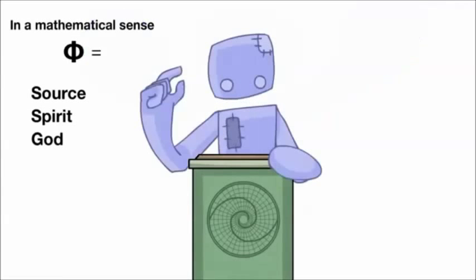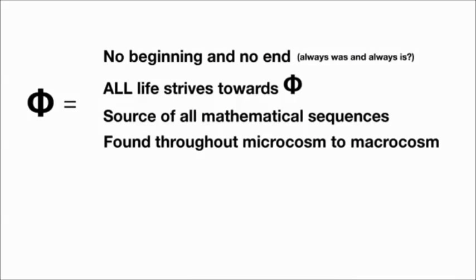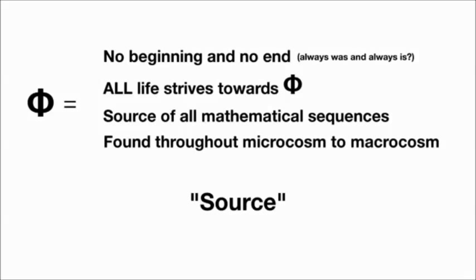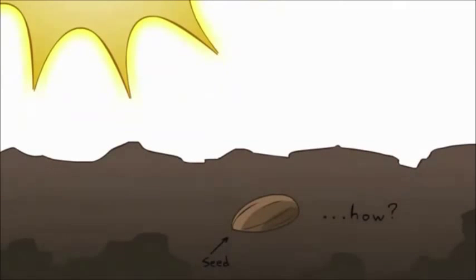So Phi is basically source, or spirit, or God in a mathematical way of thinking. The math of God. Don't forget that this sequence is an intimate part of nature itself. I'm going to call it source. It is the source of all mathematical sequences, and all life in existence grows based on Phi. However, Phi has no beginning and no end.